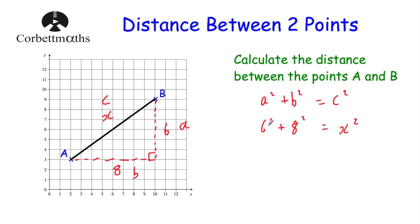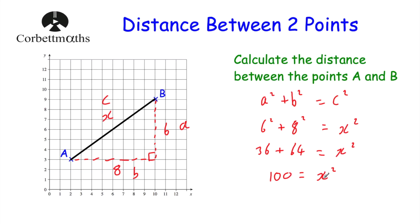Now let's work this out. 6 squared — 6 times 6. This is a non-calculator question, so 6 squared is 36, plus 8 squared — 8 times 8 is 64 — and that's equal to X squared. Now let's work out what 36 plus 64 is: 36 plus 64 is 100, so that's 100 equals X squared. This side is obviously not 100 — we need to find X, so we square root both sides. X is equal to the square root of 100, which is 10, because 10 times 10 is 100. So the distance between the points A and B is 10.